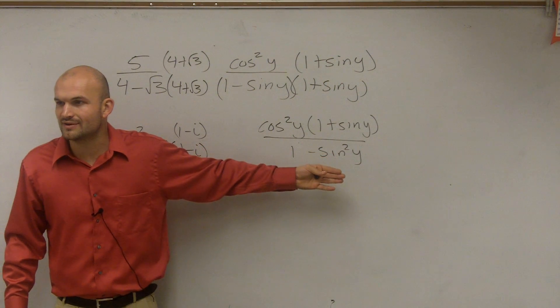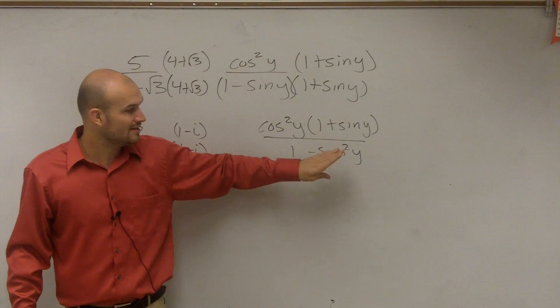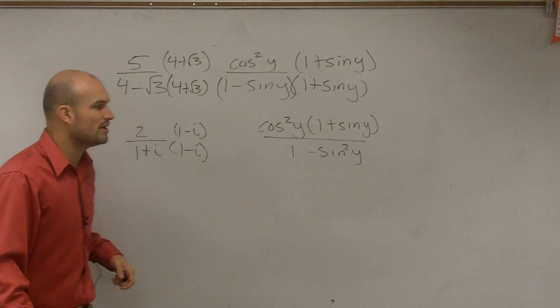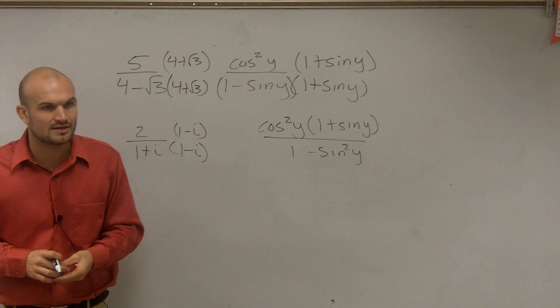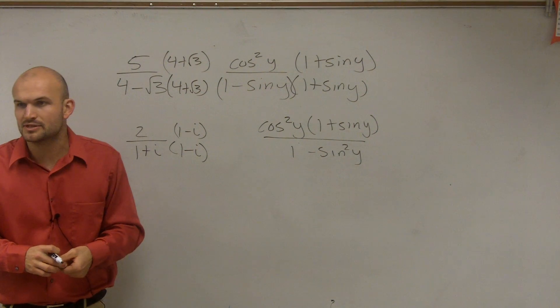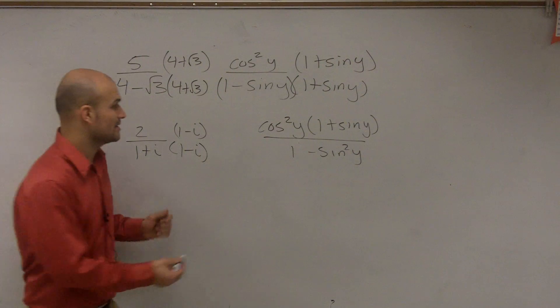Quotient, reciprocal, even odd, Pythagorean, right? Now we can apply the Pythagorean identities. And is 1 minus sine squared a Pythagorean identity? And what is it equal to by using the Pythagorean identities? Cosine squared.